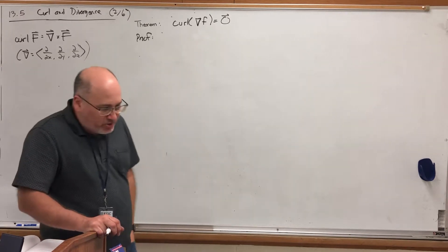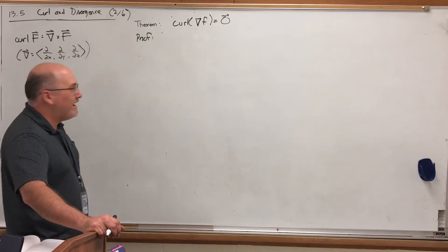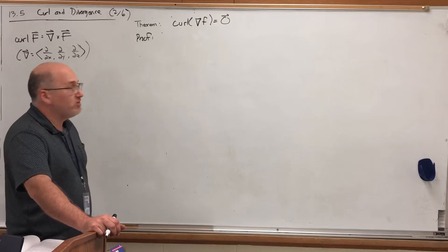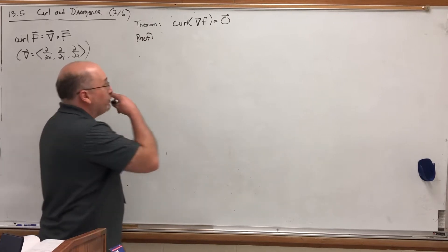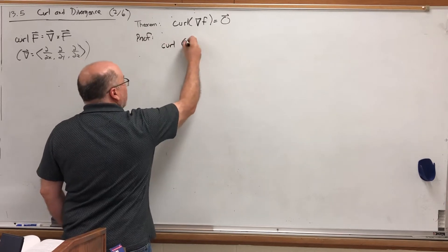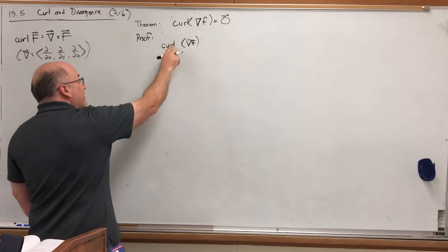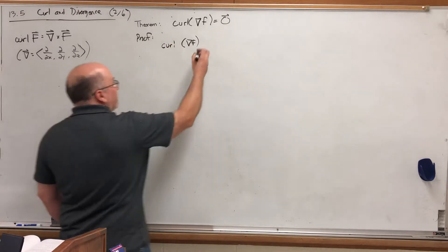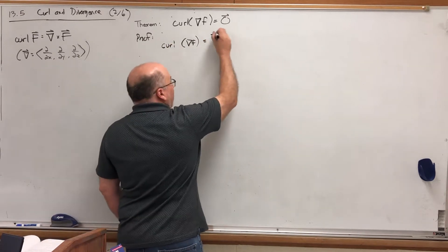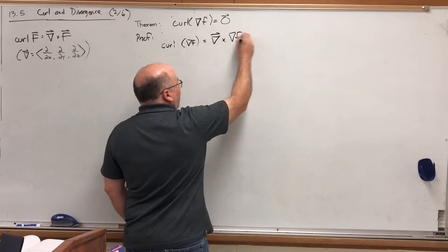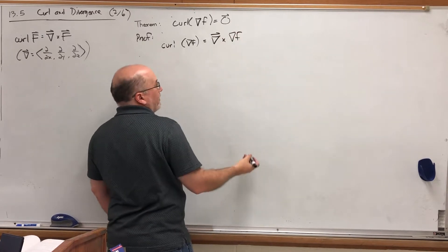We'll see the consequence of this — why this is handy when we're talking about vector fields and conservative vector fields. The proof is pretty straightforward; you just have to chase down the definitions. The curl of any vector field, gradient or otherwise, is the del operator as a vector crossed with whatever vector field you're finding the curl of.